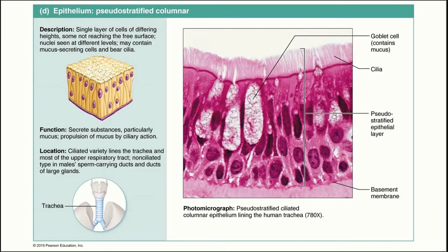The last type of simple epithelium is pseudostratified columnar epithelium. This is a single layer of column-shaped cells, but some of those cells do not extend all the way to the apical surface, making them appear stratified when they are not — that's why it's called pseudostratified, because pseudo means false. Like simple columnar epithelium, these cells function to secrete substances, particularly mucus, and they tend to have cilia on the surface to propel the mucus produced by goblet cells.